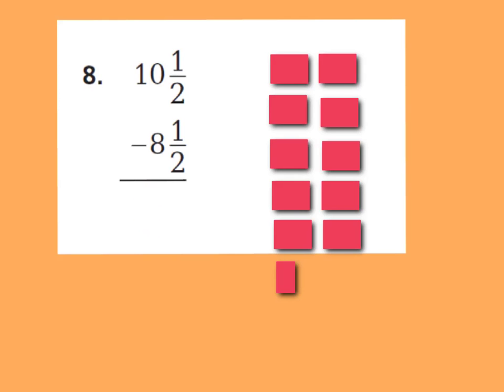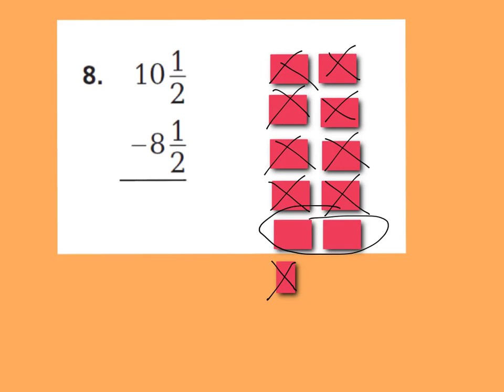Here's why it proves that 10 and a half minus 8 and a half is 2 wholes. Because if I started out with 10 and a half, like my model shows here, and I were to take away 8 and a half — 1, 2, 3, 4, 5, 6, 7, 8, and a half — all that remains is 2 wholes. So when in doubt, draw a model.